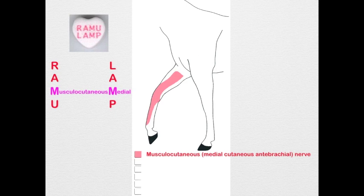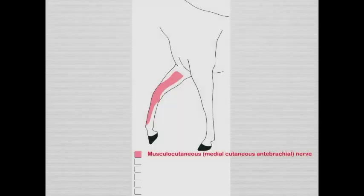This nerve can be palpated. We mentioned the lacertus fibrosus when we talked about the biceps brachii — that's the long tendon of the biceps brachii that blends into the extensor carpi radialis muscle. As you palpate that, you can feel a pop under your finger of this medial cutaneous antebrachial nerve.